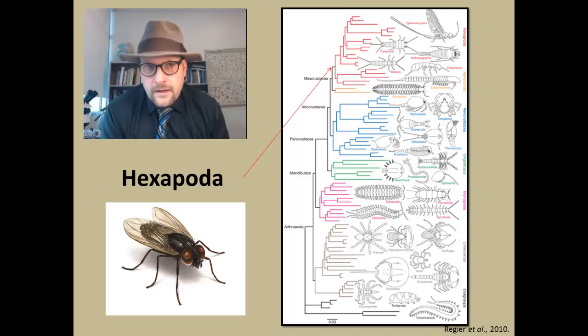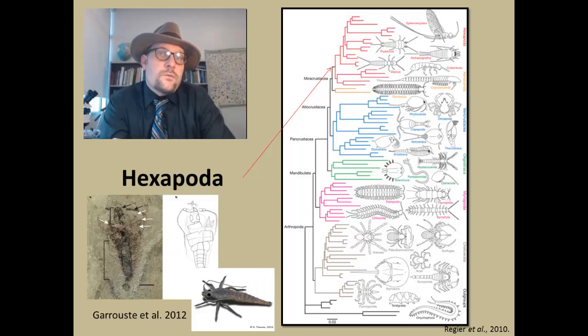They have an anterior head, a thorax, and a posterior abdomen with three paired legs. So trilobites, with their many legs and segments, are not a member of this group.